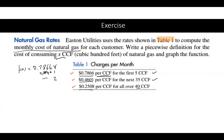That formula applies for the first five CCF, meaning x is greater than zero and less than or equal to five — that's the first segment. In the second segment, x should be above five because we've entered the second region, and x should be below 40.